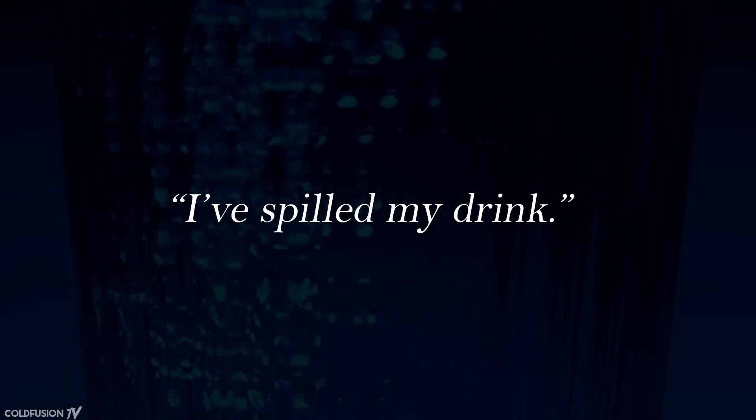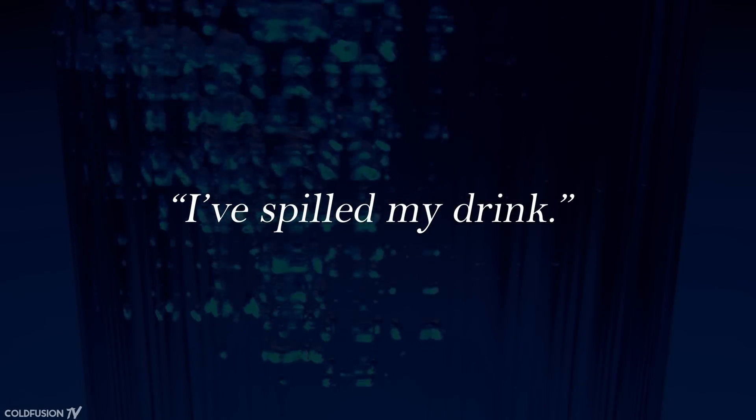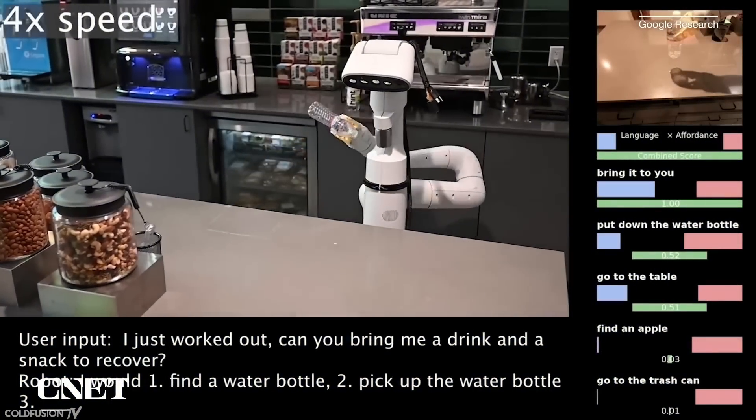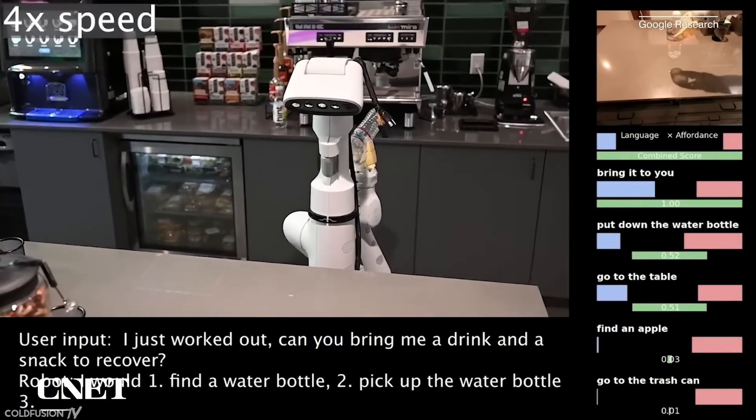To give an example, a user can ask a task: I've spilt my drink. The robot interprets the sentence using the language model. It comes up with a bunch of solutions in its software but only selects what it's capable and best at doing. It then analyzes its environment to see how to physically proceed.